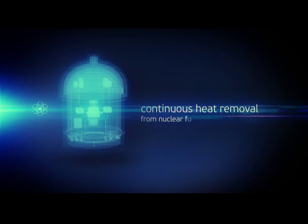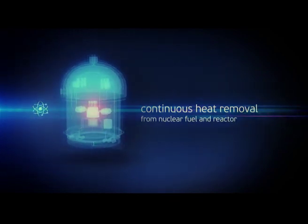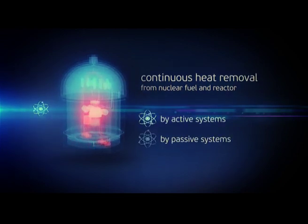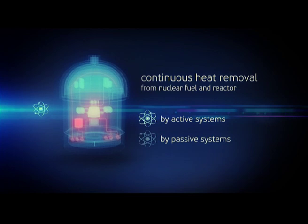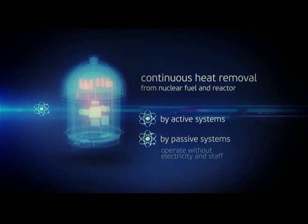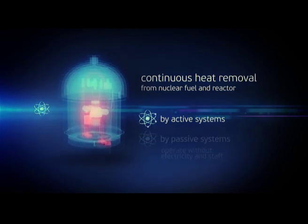The second task, continuous heat removal from nuclear fuel and reactor, is solved by combinations of active and passive safety systems. A difference between them is that the passive safety systems operate without electricity and involvement of personnel. Let's look at the active safety system, which is responsible for removing heat from the energy block via the second circuit.